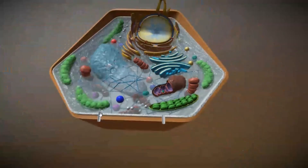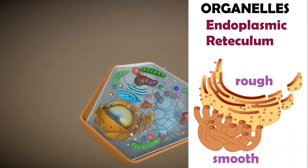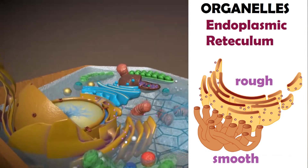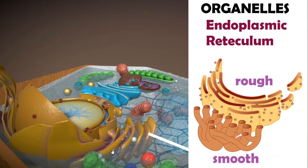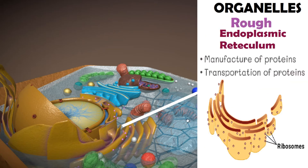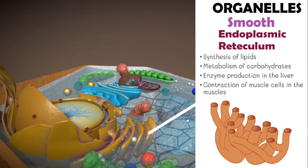Another organelle is the endoplasmic reticulum, or ER for short. There are two types: the smooth endoplasmic reticulum and the rough endoplasmic reticulum. The smooth ER is named so because it lacks ribosomes on its surface. The rough endoplasmic reticulum, on the other hand, has ribosomes, so it is involved in the manufacture of proteins in the cell. The rough ER also helps in the transportation of protein, while the smooth ER is involved in the synthesis of lipids like phospholipids, which are used to build the cell membrane.